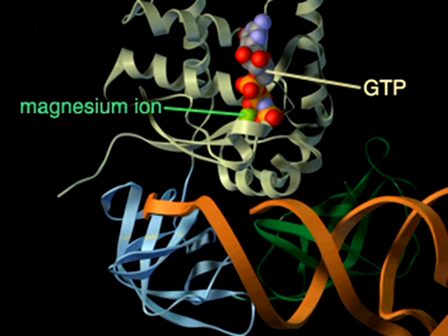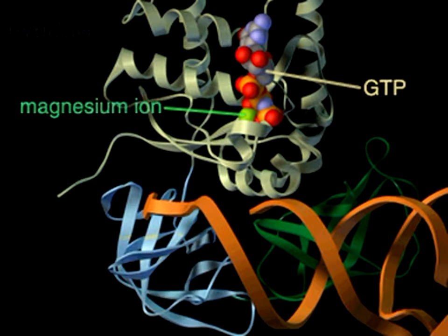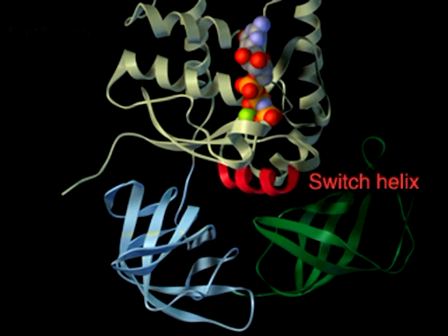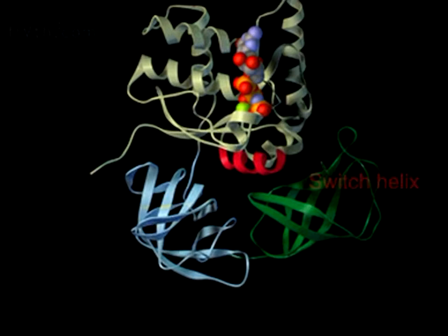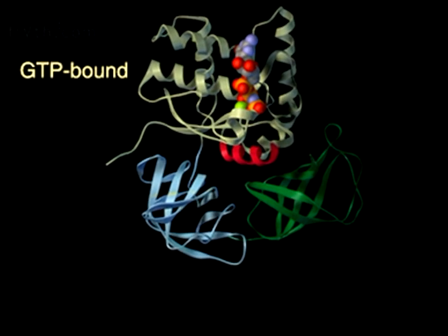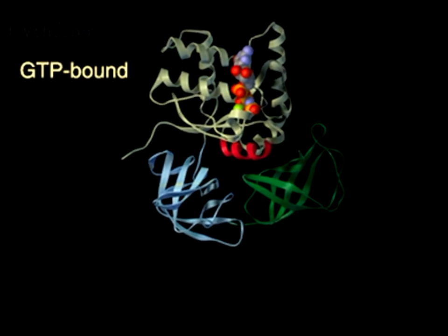An important dynamic element in the structure of elongation factor Tu is the switch helix. As GTP is hydrolyzed and the gamma phosphate is released, the switch helix rearranges.